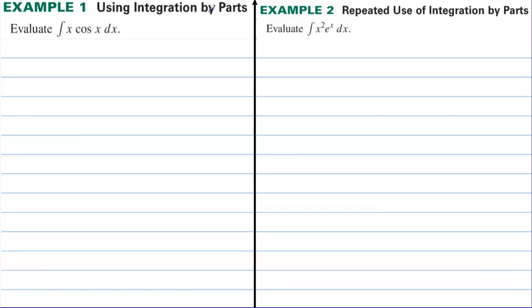Example one: using integration by parts. Evaluate the integral of x cosine of x. We're going to choose two things — we're going to choose u and we're going to choose dv.